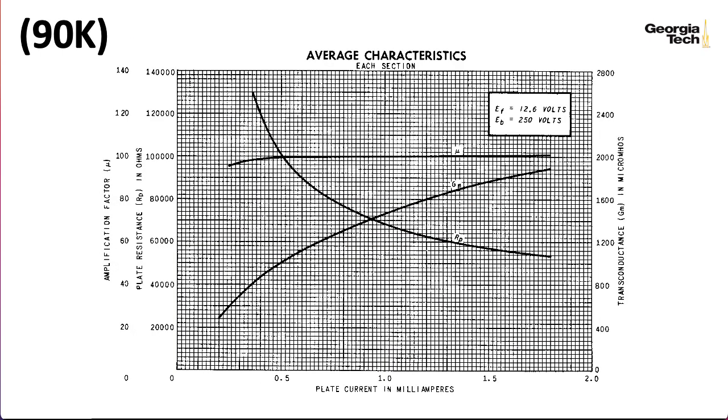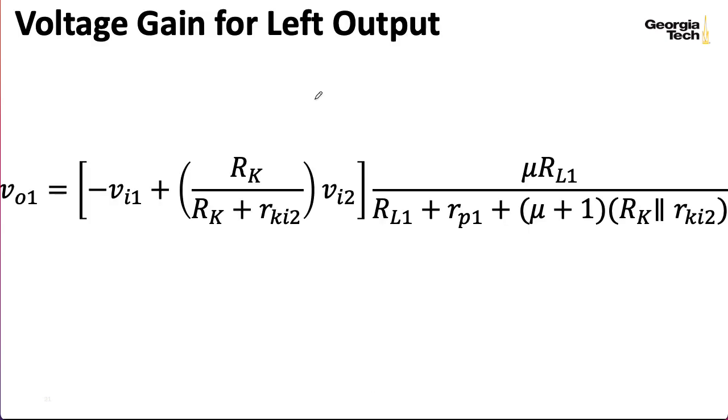For the sake of argument, let's say we picked a quiescent current of 1.6 milliamps. To absolutely no one's surprise, we would get a mu of 100 ohms. And here we get a plate resistance of 56k. Now, if I were to look at what it is at 1.65, which is somewhere in here, well, you'd probably read off the same RP at that point. So it's not that big of a deal. Anyway, let's take these values and plug them into the monstrous formulas that we computed in the last lecture.